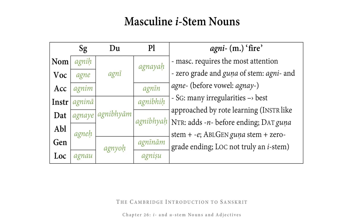Up next, masculine I stems. These require the most attention among I stems because they are formally the most complex. They have both the zero-grade and the guṇa of their stem. For example, from the masculine I stem noun agni meaning fire, we get agni as the zero-grade stem, but also agne as the guṇa stem. The guṇa stem agne appears as agne only before consonants, and before vowels it appears as agnai. The singular of masculine short I stem nouns has many irregularities and is best approached by rote learning.